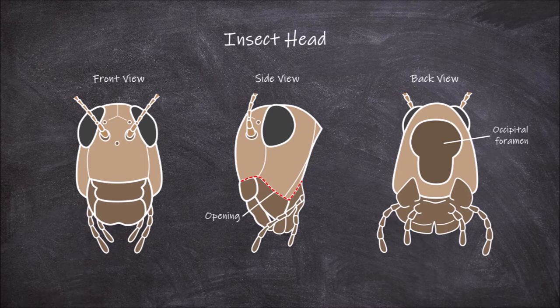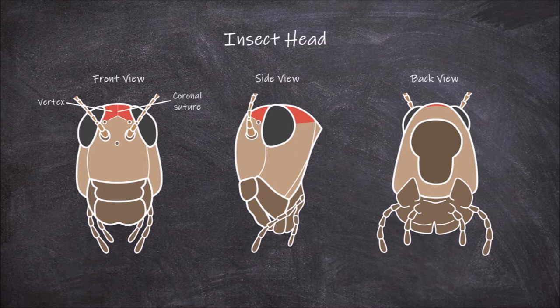The sclerite found on the top of the head is called the vertex. In the centre of the vertex is a suture known as the coronal suture. The coronal suture splits off into two frontal sutures that run down the face.